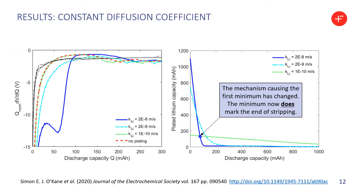As one last control study, we replaced the diffusion coefficient — including all the peaks — with just a flat line. The dV minimum disappears. If you increase the lithium plating Butler-Volmer constant, it comes back, but the physics has now changed: the minimum does mark the end of stripping in that case.